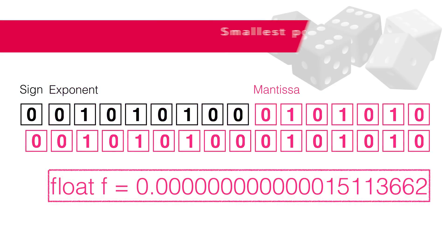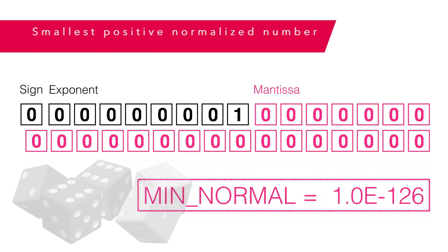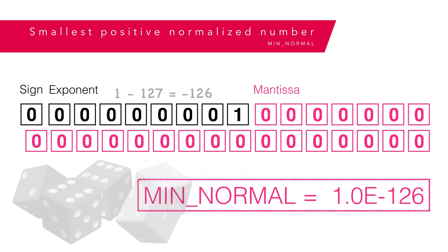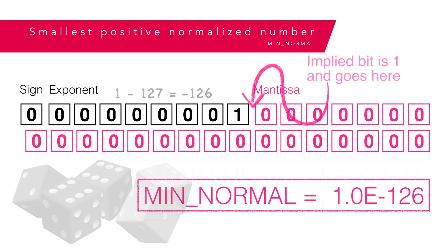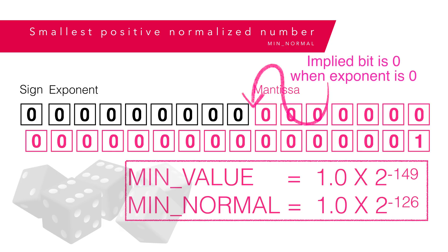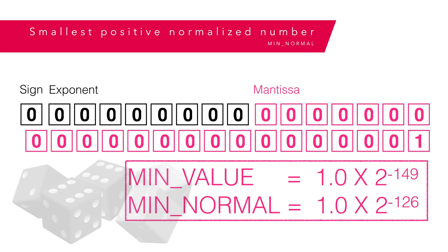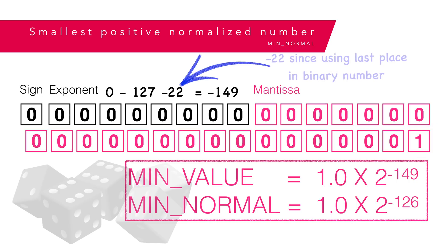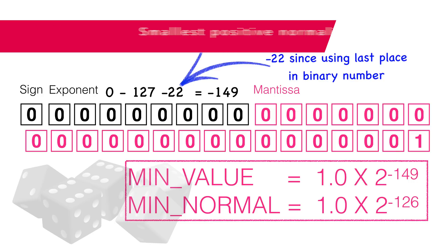MIN_NORMAL is a bit more complicated. The mantissa has an implied bit, almost always 1, so the smallest number we can represent looks like this: the exponent is 1 minus the bias of 127, which equals minus 126. The mantissa is all zeros, and using the implied bit, we get 1 times 2 to the minus 126. If the exponent is all zeros, the implied mantissa bit is also zero — in that case the mantissa is called denormalized. The exponent becomes zero minus the bias 127, which equals minus 127, and the smallest bit we can use gives us the smallest positive float of 1 times 2 to the minus 149. That's a huge difference in the smallest representable number. This is used so we can get more numbers near zero at the expense of accuracy.